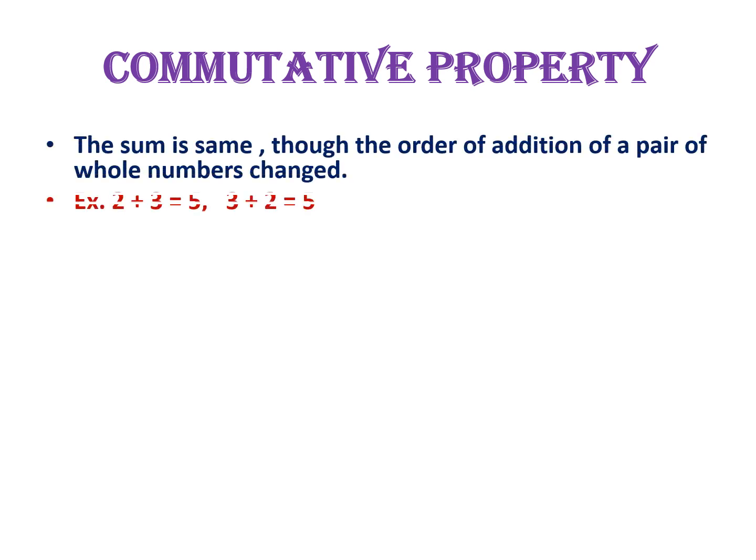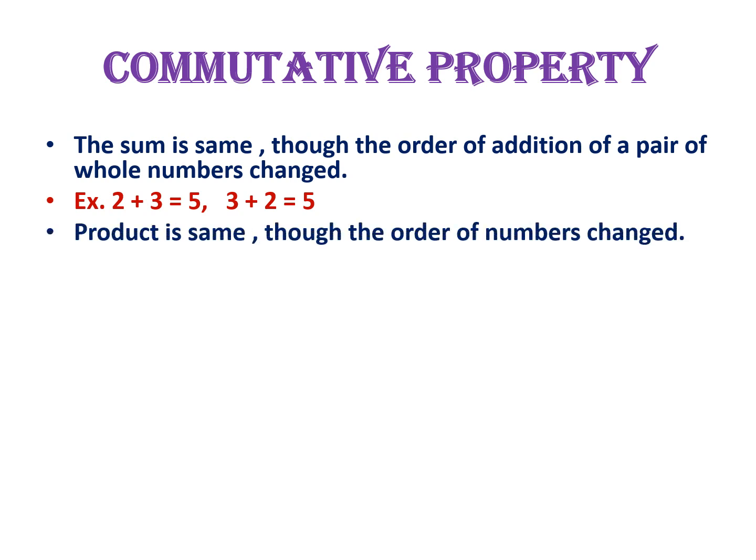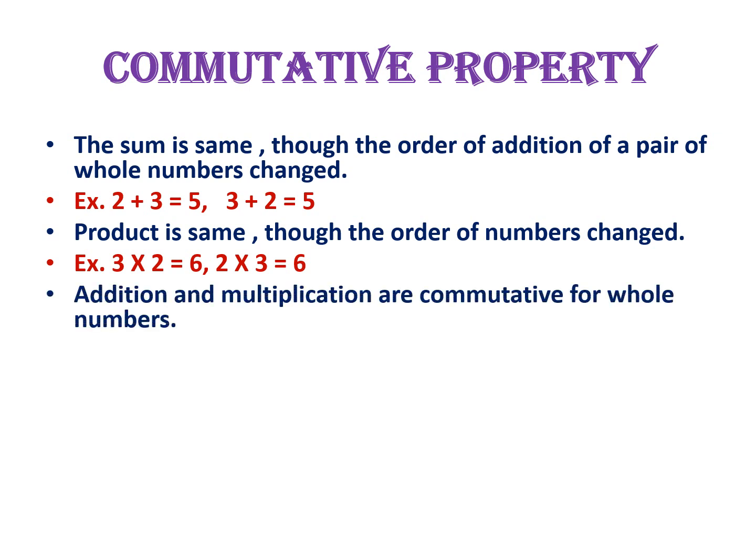Next property is commutative property. Let us see one example in addition: 2 plus 3 is equal to 5 and 3 plus 2 is equal to 5. In both cases, we get 5. Now let's see one example in multiplication: 3 into 2 is equal to 6, and 2 into 3 is also 6. From this, we can say that the sum or product is the same even though the order of the numbers is changed. That is the commutative property — the sum is the same though the order of addition of a pair of whole numbers is changed.